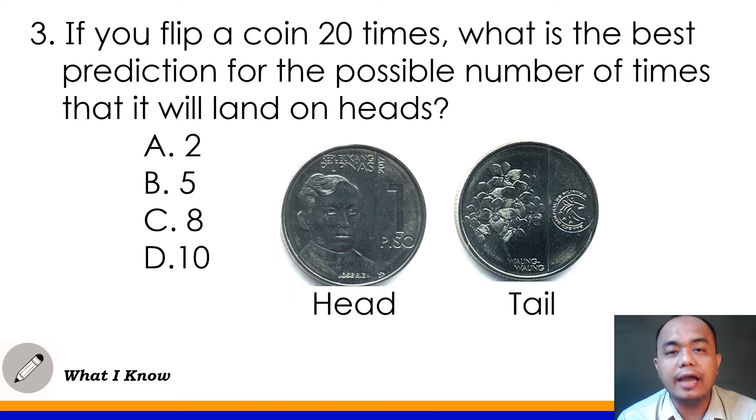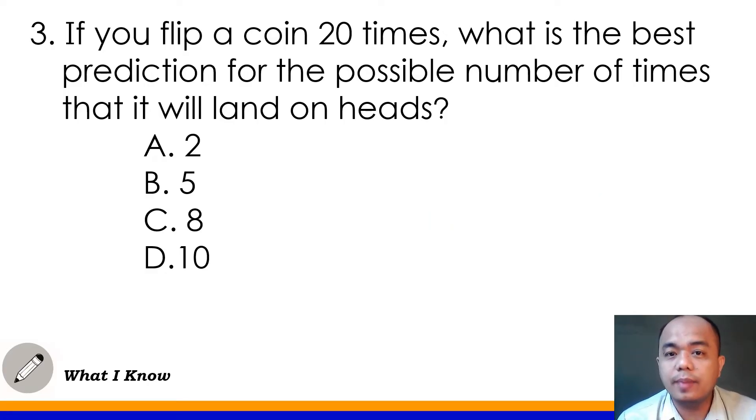Now, kung mag-flip daw tayo class ng coin 20 times, ilang beses kaya lalabas ang head na side ng coin? Para malaman natin yan, so we'll have this one. Ilang parts ba ng coin ang head? Yes. Meron lang isang part ang ating coin na head. And how many parts does our coin have? Yes. We have two parts all in all. The head and the tail. So meaning, kung isang pag-flip lang, one half lang yung possibility na lalabas ang head out of two.